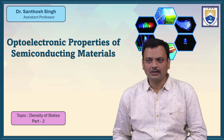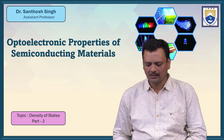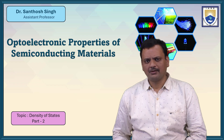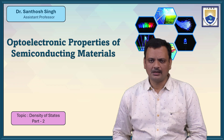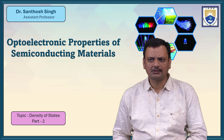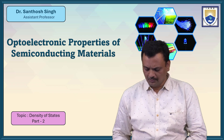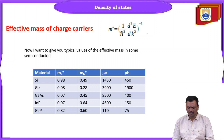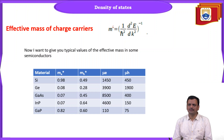In the last video lecture I already discussed something about optoelectronic properties, where we discussed about the effective mass of the material and how the effective mass can be calculated. Let us start with a quick review about the effective mass of charge carriers and how it will be calculated. It will be calculated from the band structure.